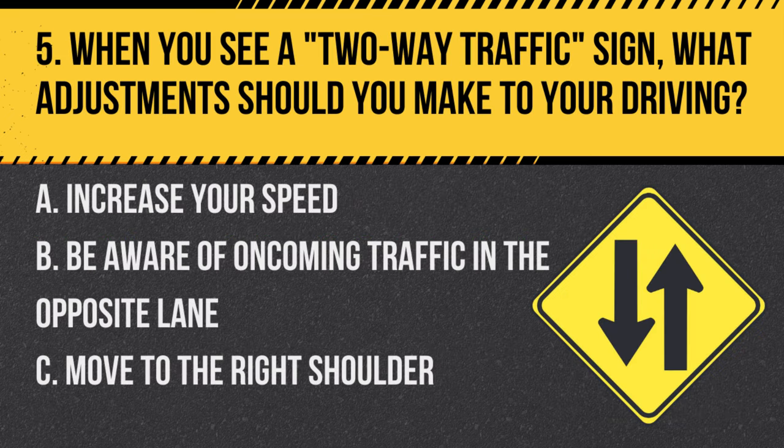Question 5. When you see a two-way traffic sign, what adjustments should you make to your driving? A. Increase your speed. B. Be aware of oncoming traffic in the opposite lane. C. Move to the right shoulder. Answer: B. Be aware of oncoming traffic in the opposite lane. This sign indicates that the road is for two-way traffic, so drivers should be cautious of vehicles coming from the opposite direction.